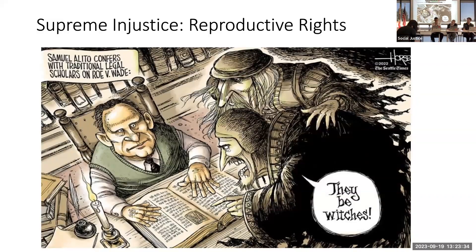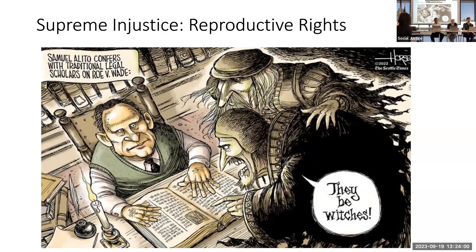What is interesting is that Justice Alito's leaked opinion cites Sir Matthew Hale, a 17th-century jurist who conceived the notion that husbands can't be prosecuted for raping their wives, who sentenced women to death as witches, and whose misogyny stood out even in his time. That's who he quoted.